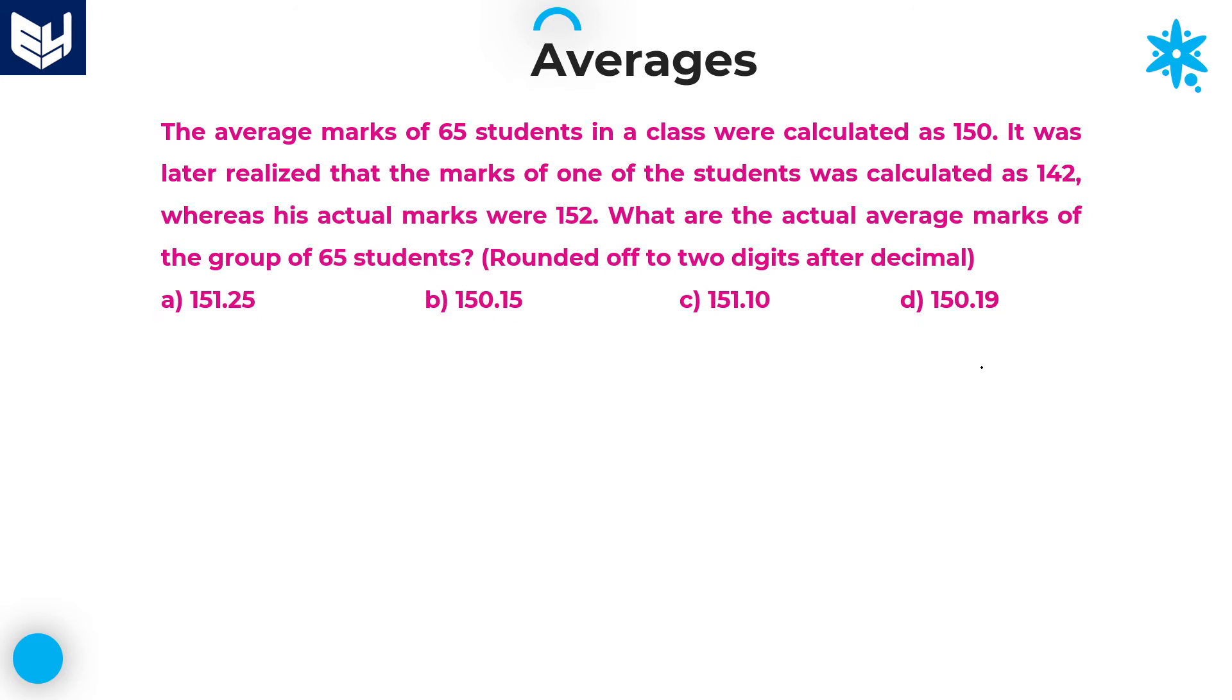Let's move on to the next question. The average marks of 65 students in a class were calculated as 150. It was later discovered that the marks of one of the students was calculated as 142, whereas his actual marks were 152. What are the actual average marks of the group of 65 students? The same application is applicable for the previous problem and this problem because both are the same model.